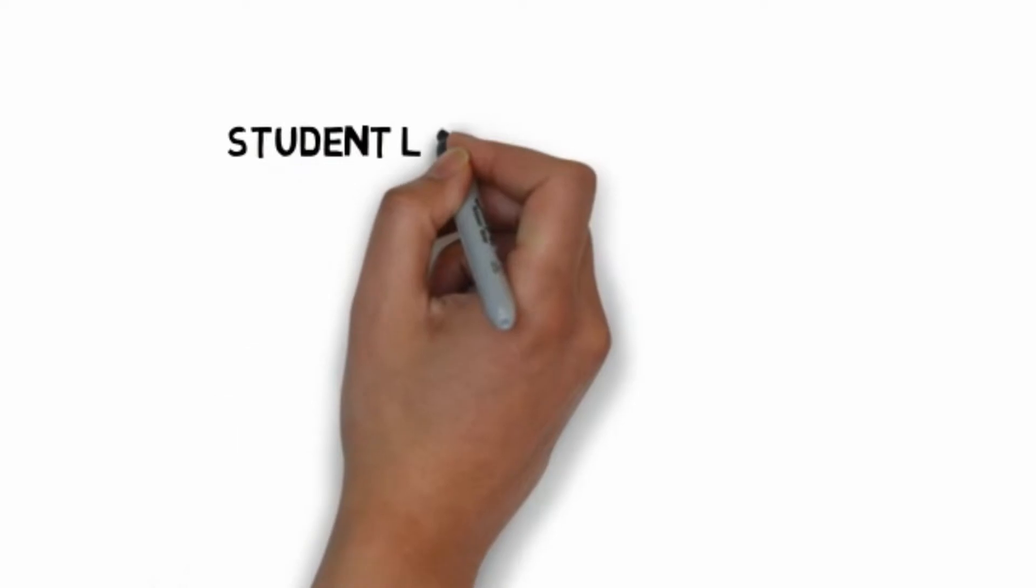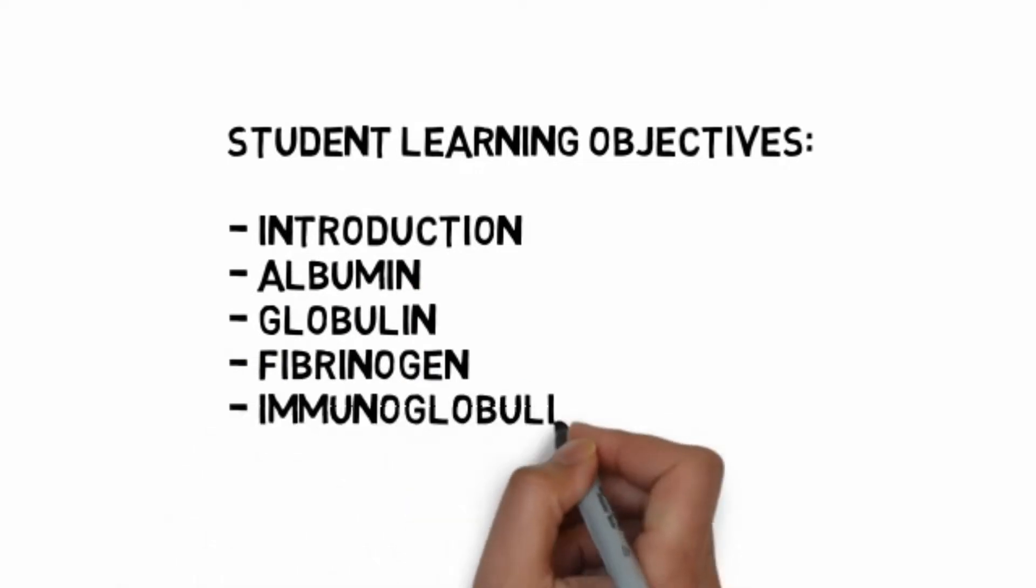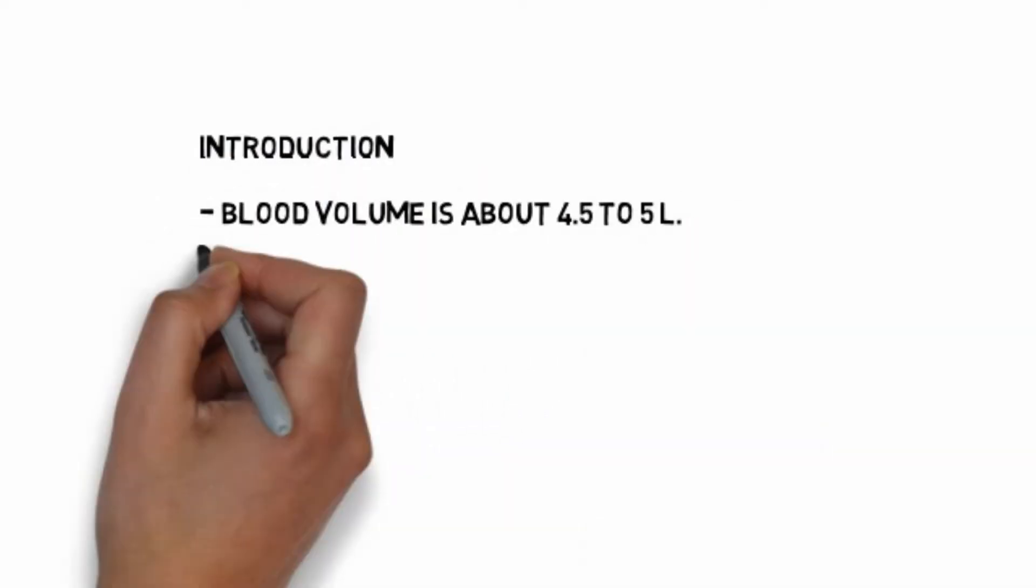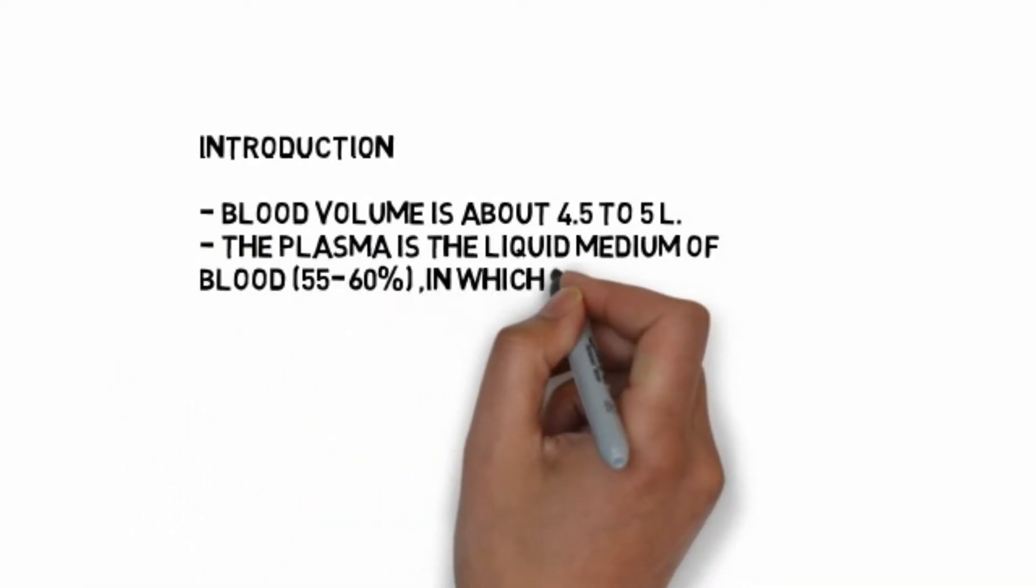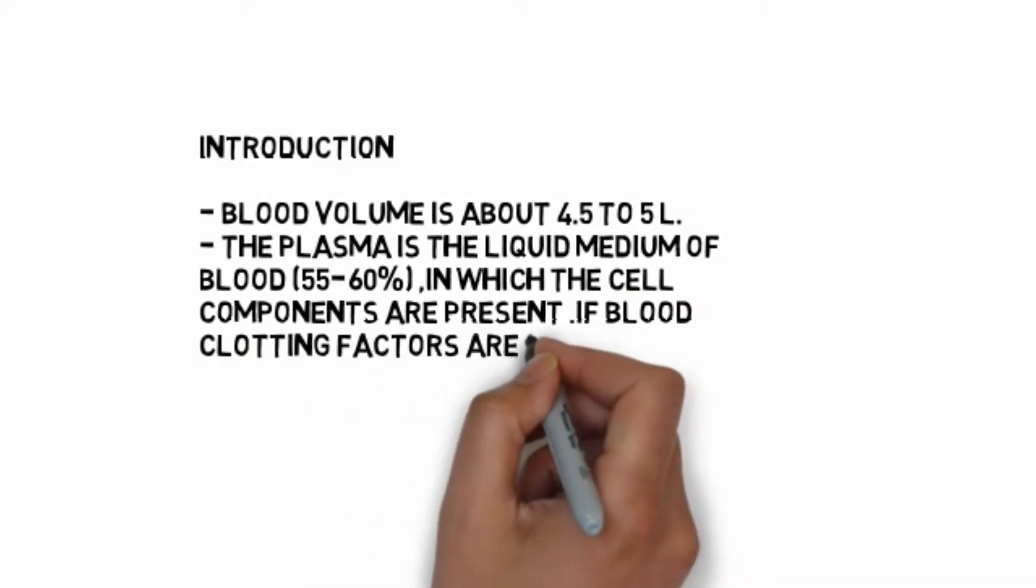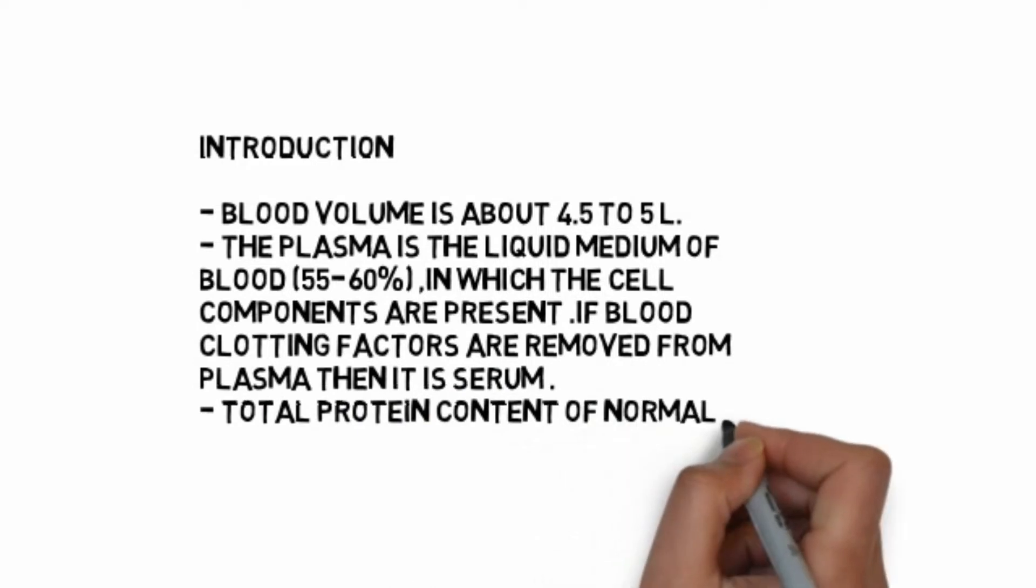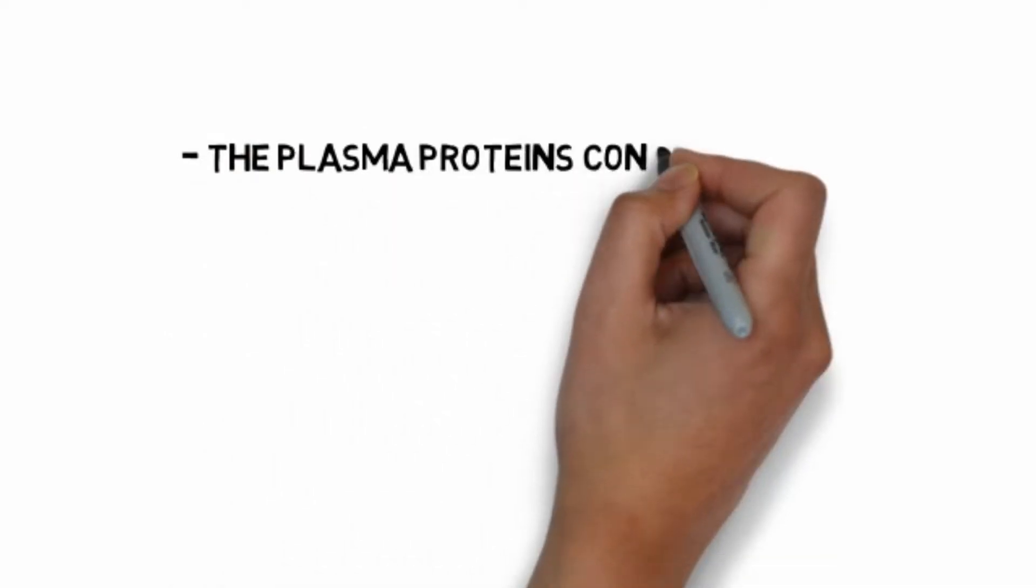This presentation on plasma proteins covers student learning objectives including introduction, albumin, globulin, fibrinogen, immunoglobulin, and clinical significance. Blood volume is about 4.5 to 5 liters. Plasma is the liquid medium of blood in which cell components are present. If blood clotting factors are removed from plasma, it is serum. Total protein content of normal plasma is about 6.4 to 8.3 grams per deciliter.